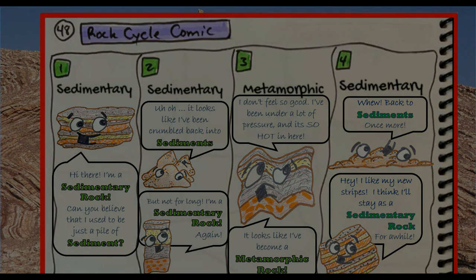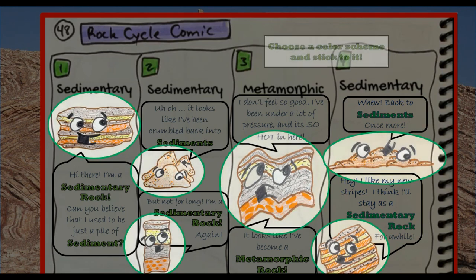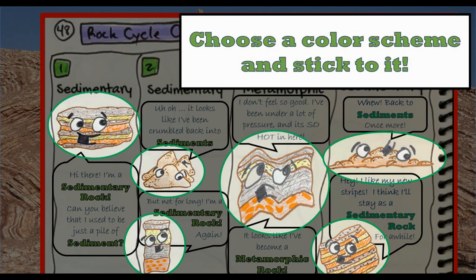Now let's look at some individual elements from my comic strip. When you draw your rocks, please choose a color scheme and stick to it. I used brown, yellow, and orange in all of my rocks and sediments, because I'm trying to indicate that the same rock is turning into different kinds of rocks as it goes through.